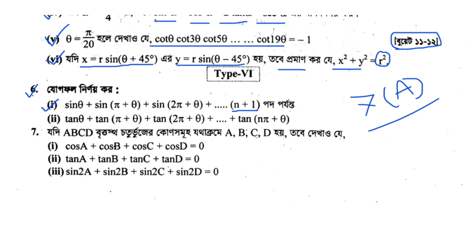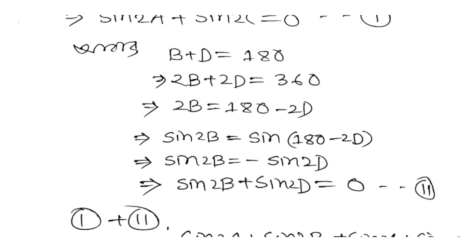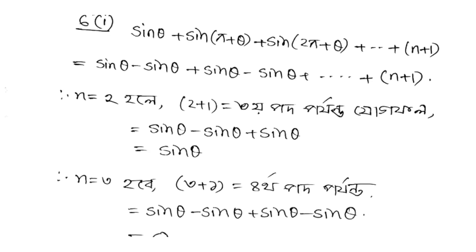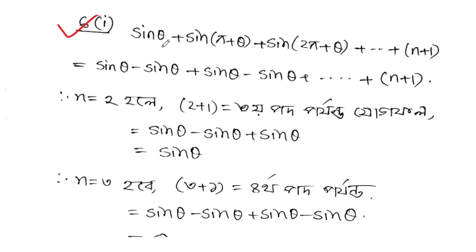First of all, we have 100. You have to understand the terminator. Last one, we have to understand the volume, because you can find it in the same way. 1 plus theta.